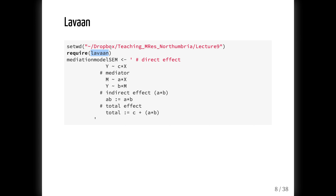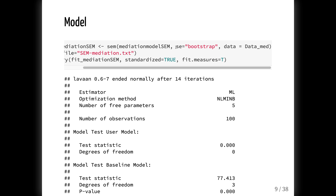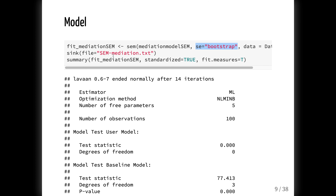Remember that we used lavaan also for confirmatory factor analysis — it's the workhorse here. This works via testing an indirect effect via the a-b path, and this is how we specify the mediation model. We first specify the direct effect, then the mediator, the indirect effect, and then the total effect. To run the model we can also request bootstrapped standard errors, and because the output is quite large I've sent it to a text file. I've also asked for standardized coefficients and fit measures.